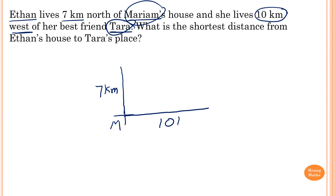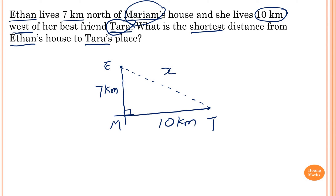This is Tara's position. The right angle is at Maryam, and the question asks for the shortest distance from Ethan to Tara, so we connect them directly. That distance is x, which is opposite the right angle — so it's the longest side and we add.